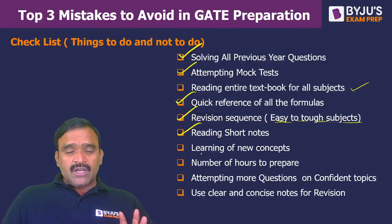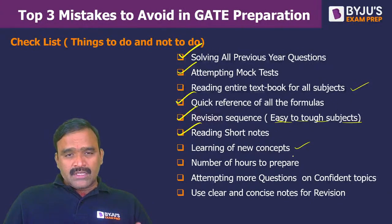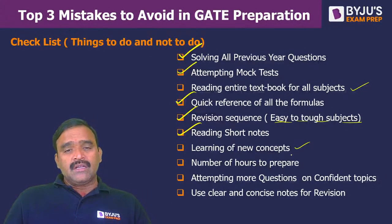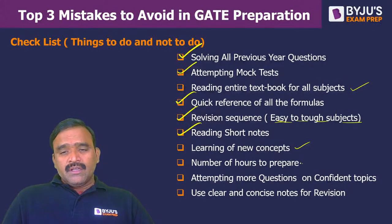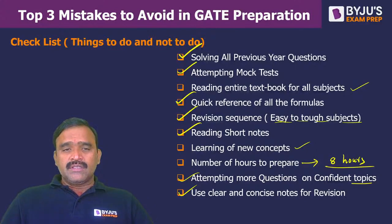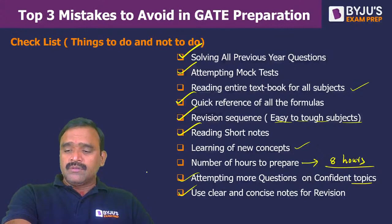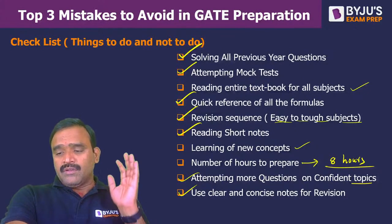Learning new concepts — if the time is very short, I don't suggest learning a new concept. Always learning a new concept is a good thing, but that depends on the situation. For example, just before three months, if you want to learn a new concept and then practice, a lot of time may get wasted, and you may lose some marks because you may not be able to concentrate on the concepts you already know. The number of hours to prepare — you have to plan for it — minimum eight hours per day is ideal. Quality time, and attempting more questions on confident topics, is required. Use clear and concise notes for revision. And things not to do — consistency is required, self-analysis is required, and you have to study all the subjects, don't leave any subject.